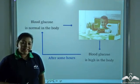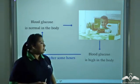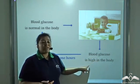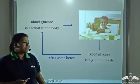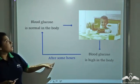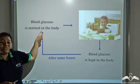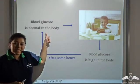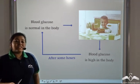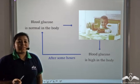So in a normal healthy man, after a meal, the blood glucose in the body increases. But after some hours, the blood glucose becomes normal and this is facilitated by the secretion of the hormone known as insulin.